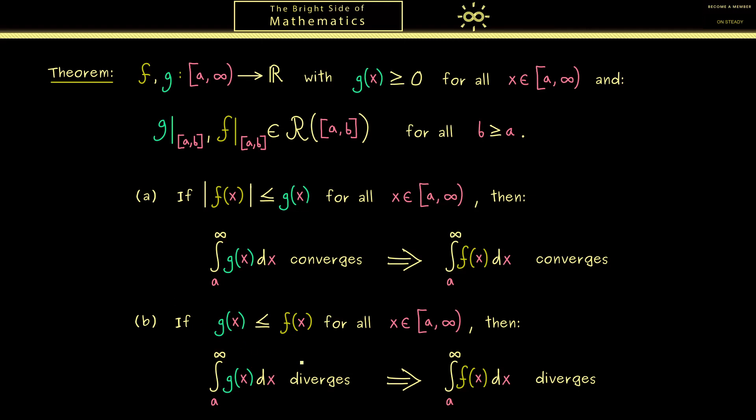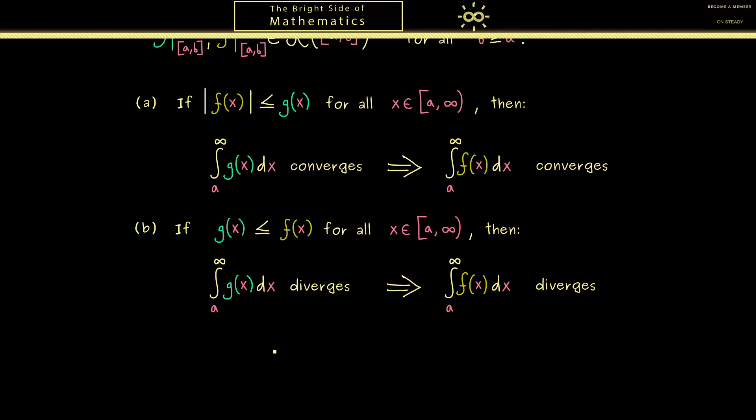Okay, then I would say let's look at an example. And indeed, for the minorant criterion you can often use the function 1 over x. There you just have to know that the integral from 1 to infinity of 1 over x is not convergent. This is not hard to see because you know an antiderivative of 1 over x. It's simply given by the natural logarithm.